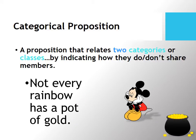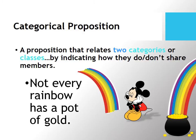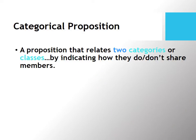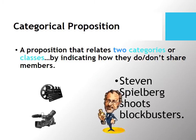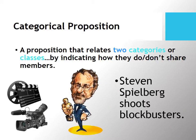Or, 'not every rainbow has a pot of gold' — sad but true. That relates the class of rainbows to the class of things that possess pots of gold. Or, 'Steven Spielberg shoots blockbusters.' That would be a category — Steven Spielberg — that has just one member in it, and persons who shoot blockbusters is a slightly larger but still rather small category.